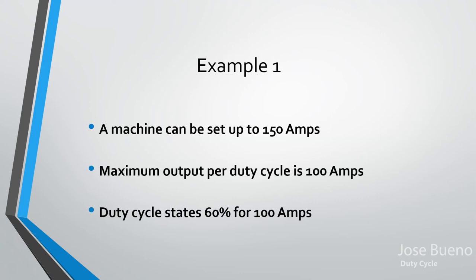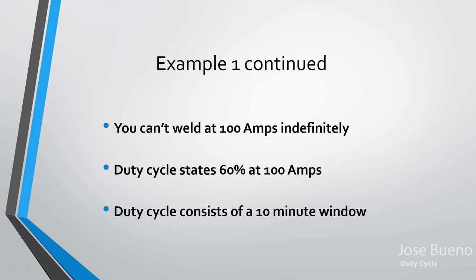Looking at the duty cycle, the first one listed is 100 amps at 60 percent duty cycle. What does this mean? Since there is a duty cycle, we should know that we cannot weld at 100 amps indefinitely — sure you could try, but you'd more than likely damage and kill your welding machine.